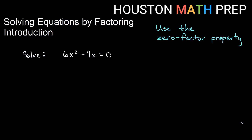Let's look at our first example using the zero factor property. We've got 6x² minus 9x equals zero. Equal to zero means if I just factor and get one side factored equal to zero, then I can figure out the answer by setting each factor equal to zero. So we'll go ahead and try to factor this — this is just a greatest common factor. If we look at 6 and 9, the greatest common factor is 3, and if we look at x² and x, the greatest common factor is x.